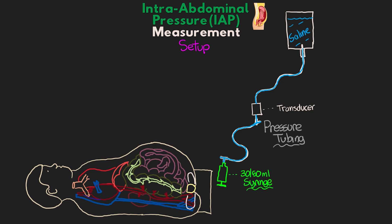Ideally the syringe attachment is at the very distal end, but it can also be up closer to the transducer — the location really doesn't matter, but if you can keep the three-way used for zeroing open, that's preferable. Once you have the syringe attached, make sure that three-way stopcock is off to the end of the pressure tubing or off to the patient. Next, take your CHG, alcohol, or betadine and clean that sampling port of the Foley drainage tubing.